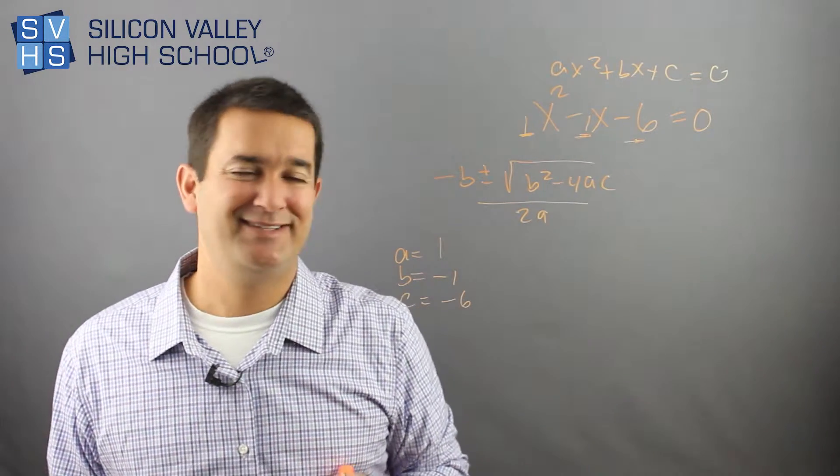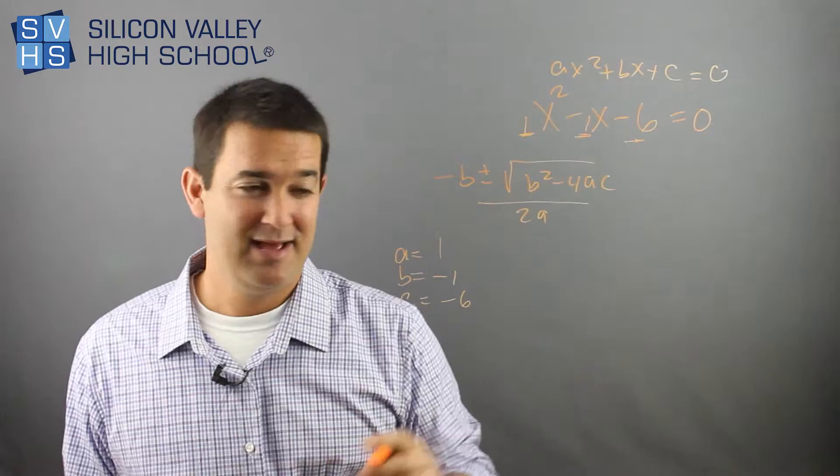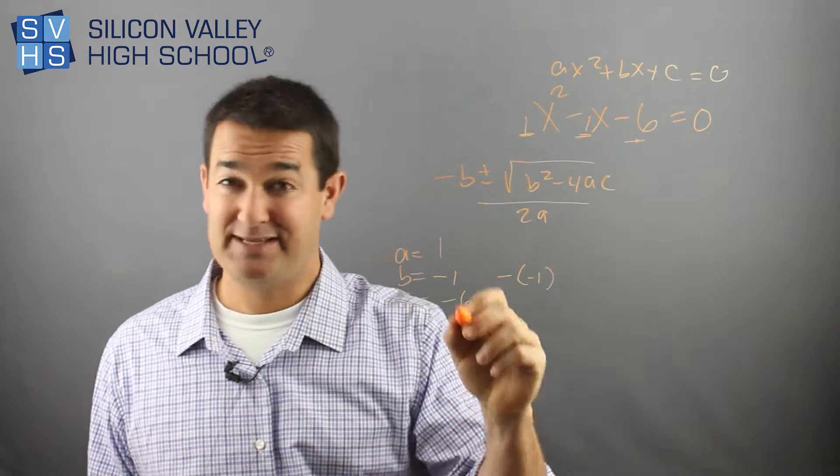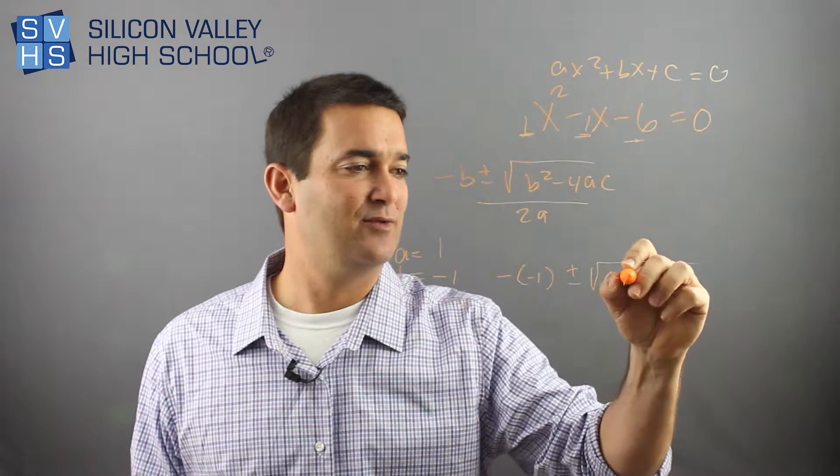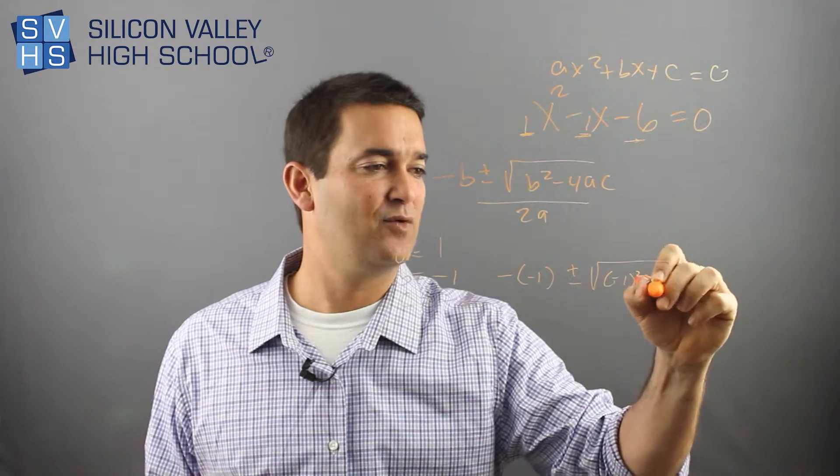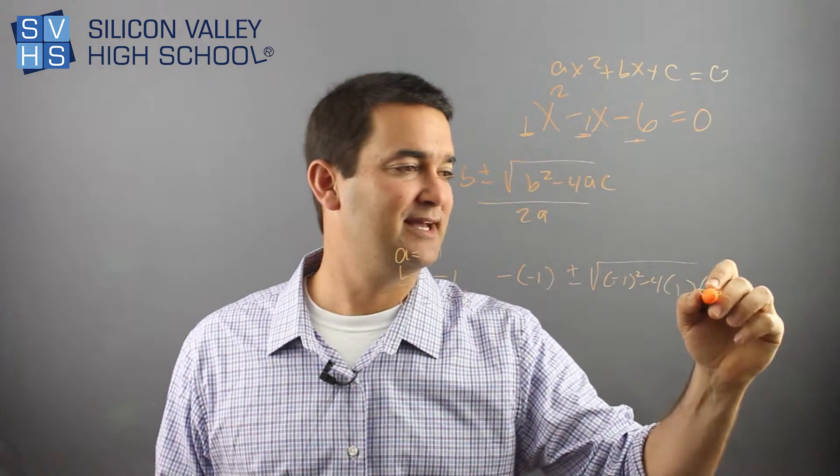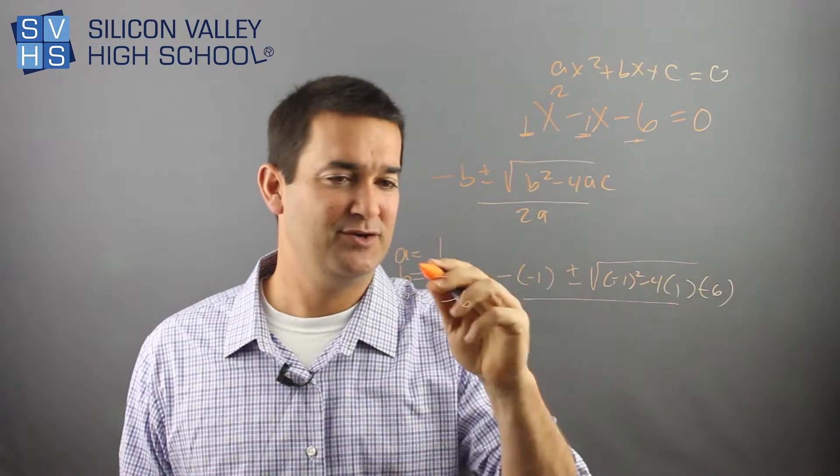Then you just, you know, you still could mess up, honestly. People just mess these up all the time because there's so many steps. But then you just plug them in. So negative b would be negative negative one, right? b is negative one. Plus or minus b squared, so it's negative one squared. Minus four times a, which is one, times c, which is negative six. That looks easy, but this is where, excuse me, over two a...